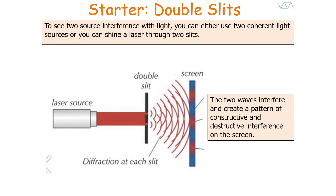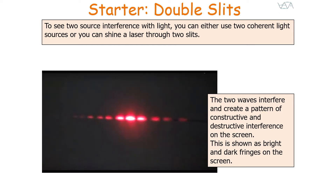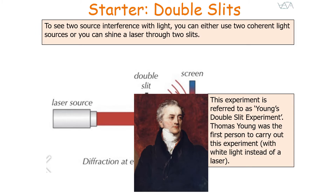As these two waves diffract through the gaps, they'll interfere, creating a pattern of constructive and destructive interference on the screen, which is shown as bright and dark fringes, as you can see in the following photograph. You get areas of brightness, which are bright fringes, and areas of complete darkness, which are dark fringes. This experiment is referred to as Young's Double Slit Experiment, because Thomas Young was the first person to carry it out — however, he used white light instead of a laser.